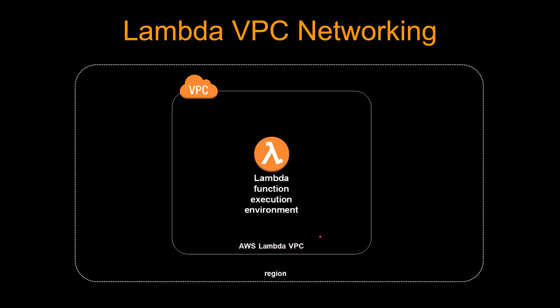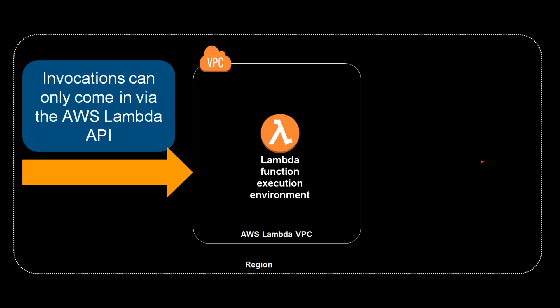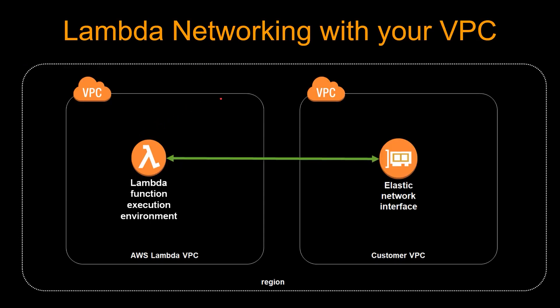We have this Lambda on the AWS Lambda VPC managed by AWS. Any invocation coming to your Lambda comes via the AWS Lambda API — not the API Gateway API, but simply the API to invoke the Lambda. Think of it as an AWS managed API that's executing the Lambda. When that Lambda within VPC is invoked, it actually creates an elastic network interface in your VPC, which is the customer VPC. This elastic network interface consumes an IP address in the VPC, and this ENI interacts with the resources within your VPC.